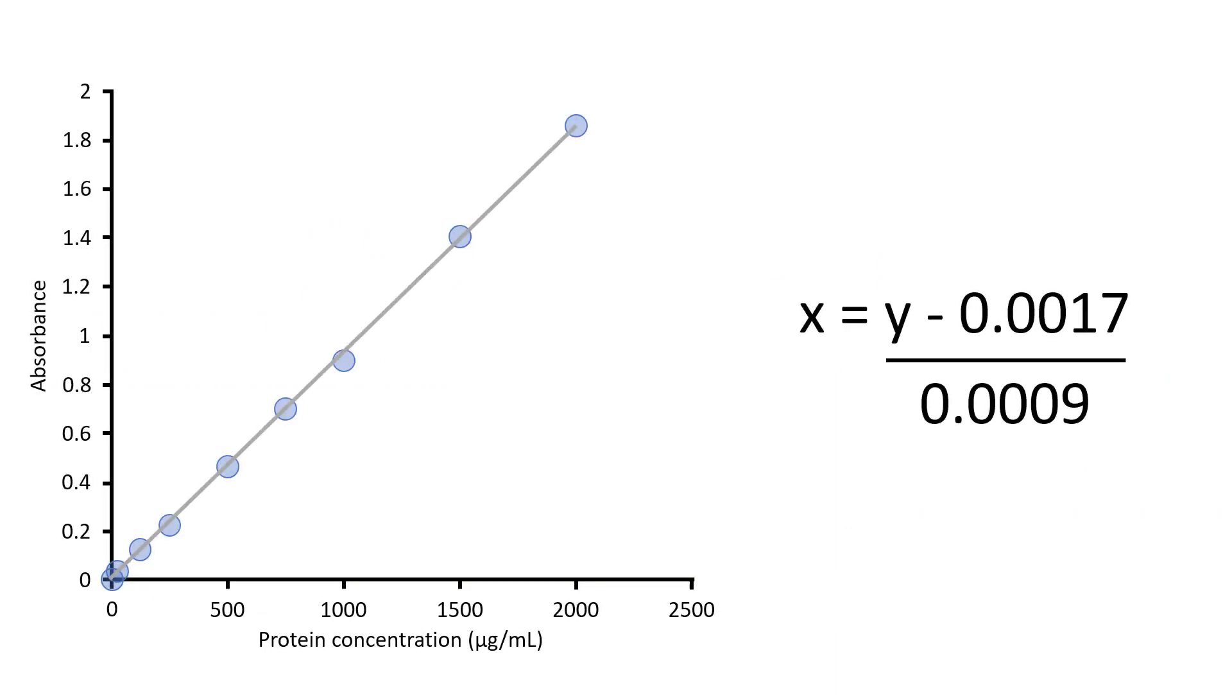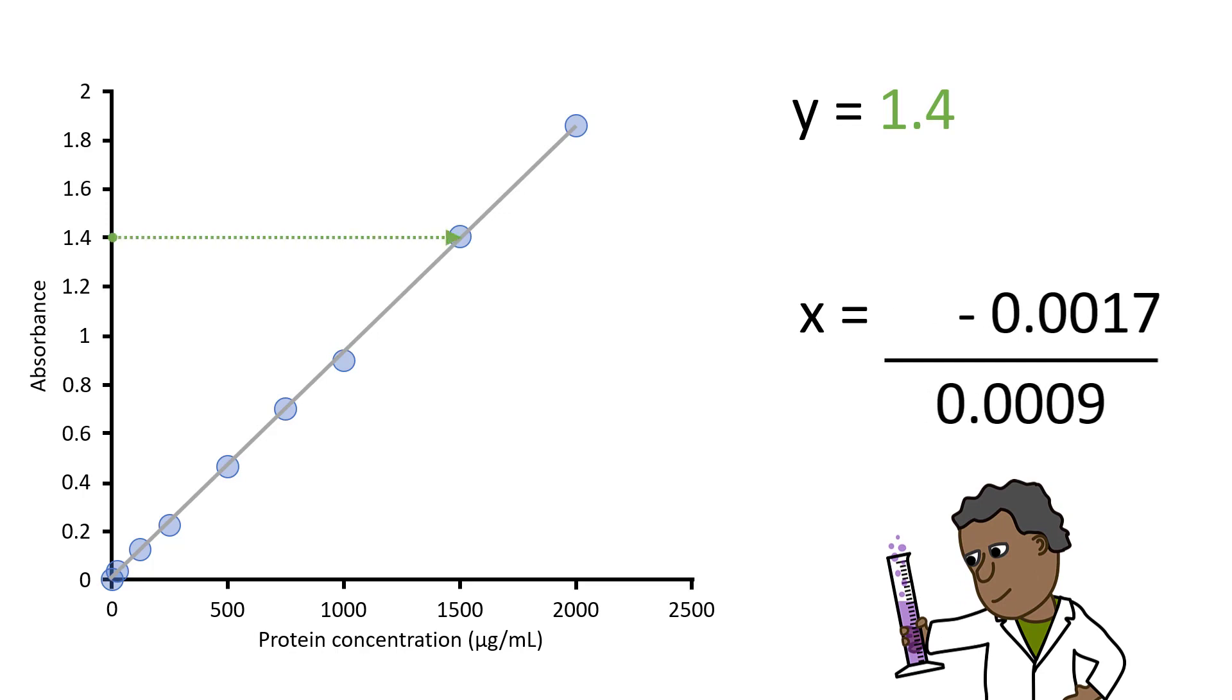My first sample gave an absorbance reading of 1.4. This means to work out the value of x for this sample I would do 1.4 subtract 0.0017 and then divide that answer by 0.0009 and doing so will give an answer of 1553.7 and this will be in the same units as my standards which is micrograms per milliliter. So my first sample had a protein concentration of 1553.7 micrograms per milliliter.